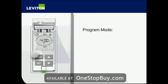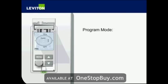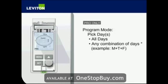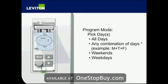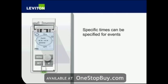Press Menu until PRG appears and then press Set. Use the arrow up or down buttons to first select the days of the week the event will occur. Scrolling with the arrow buttons allows you to select Monday through Friday as the second option after all seven days. Press Set when this appears.